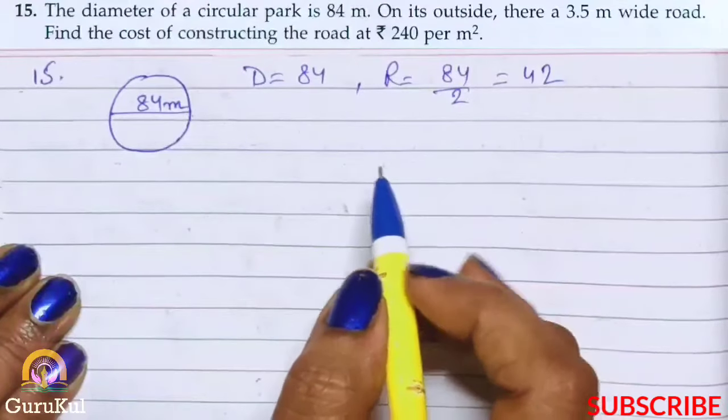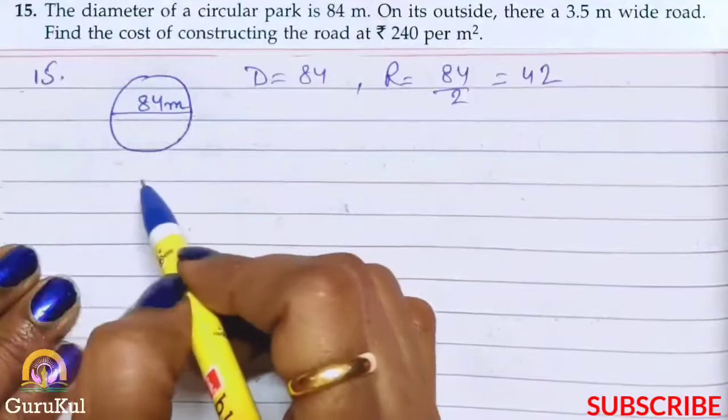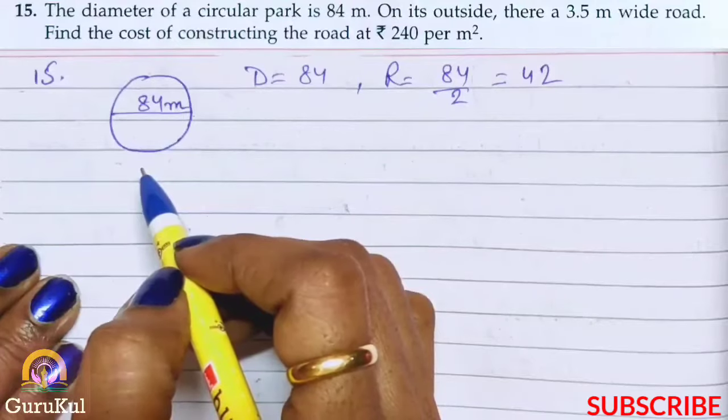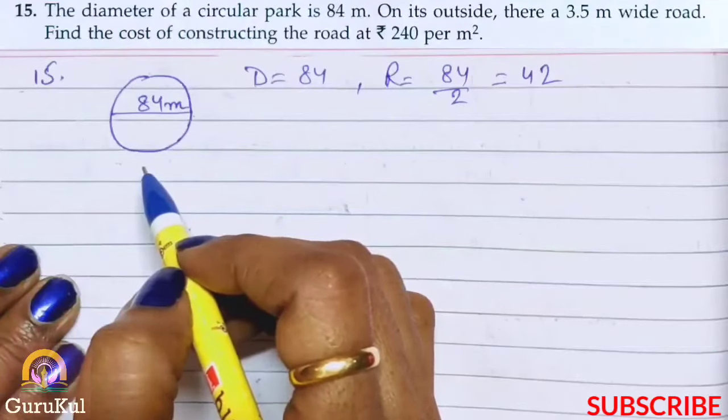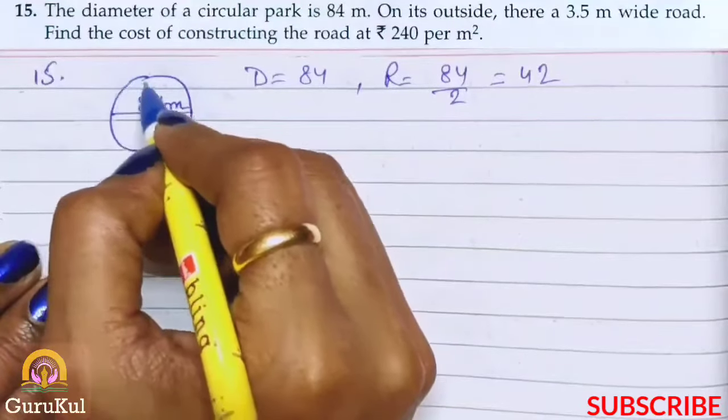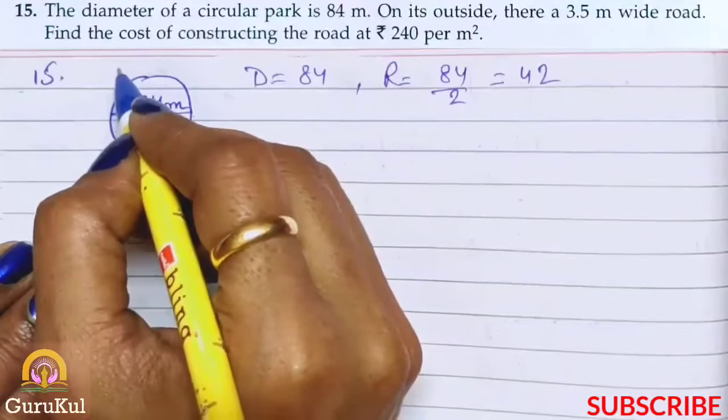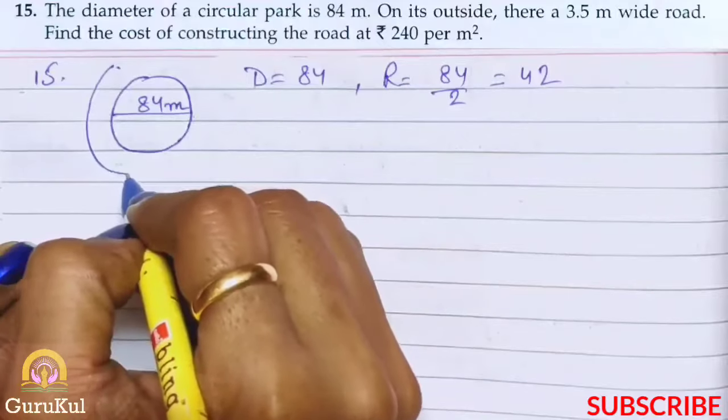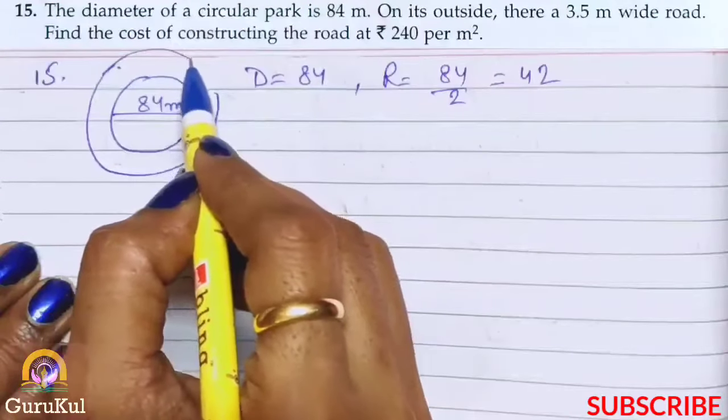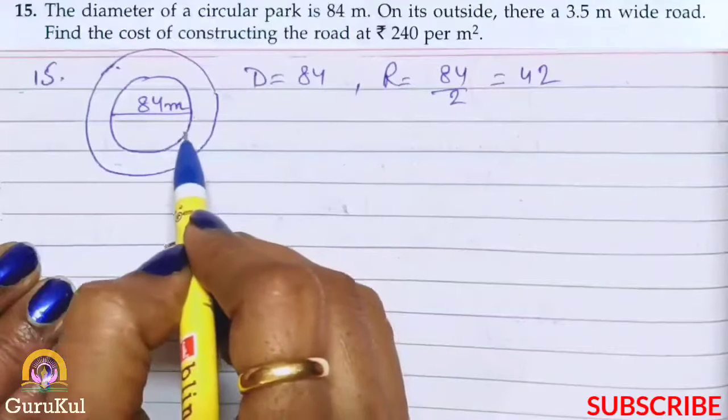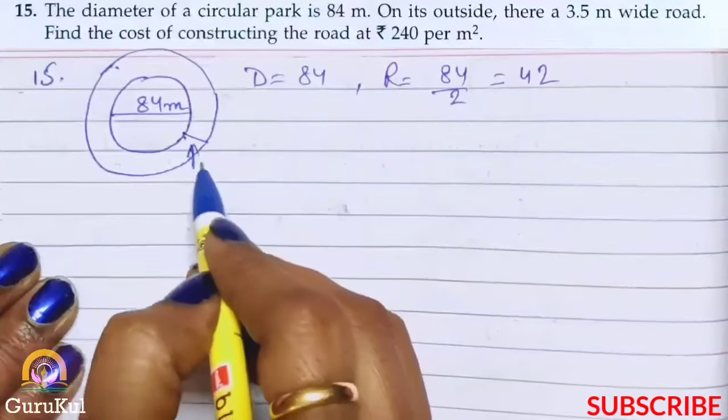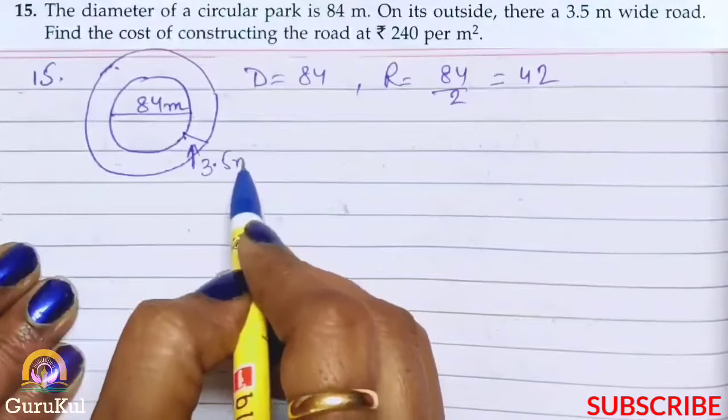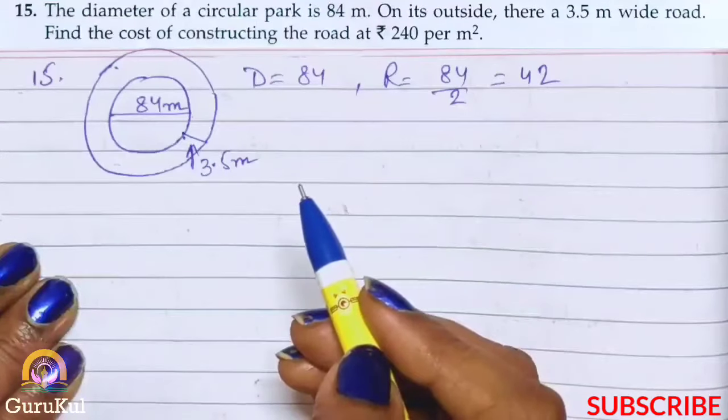Now it is said, on its outside there is a 3.5 meter wide road. So outside of the park, see, there is a road built whose width is 3.5 meters.